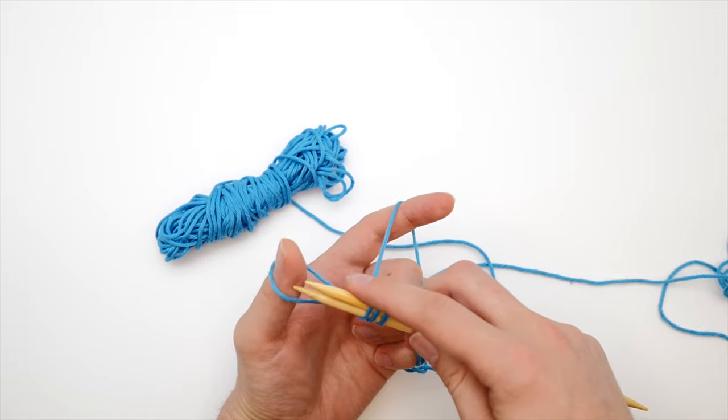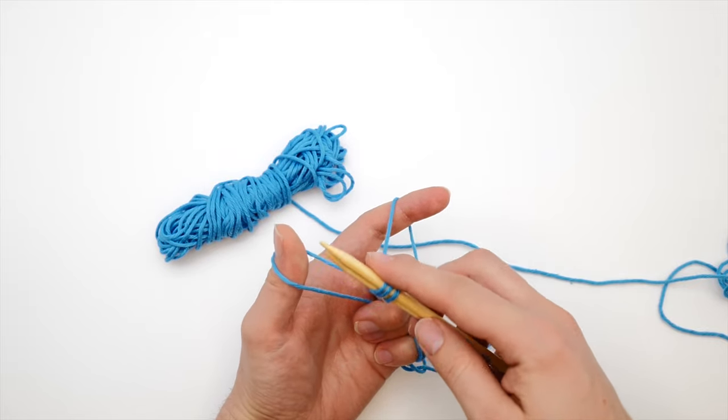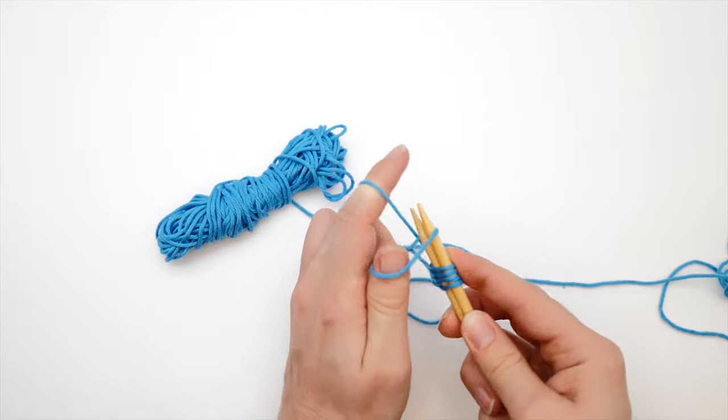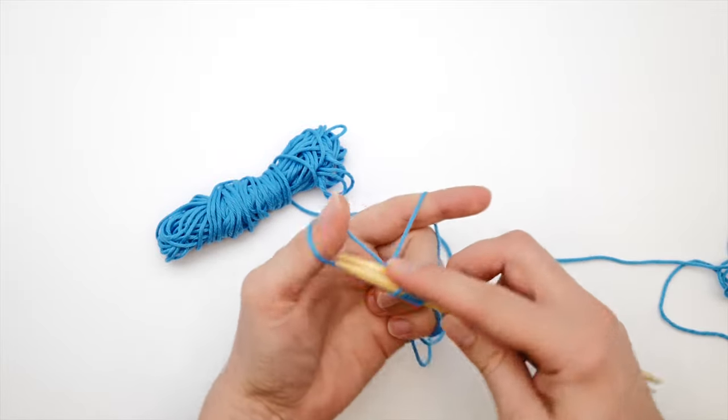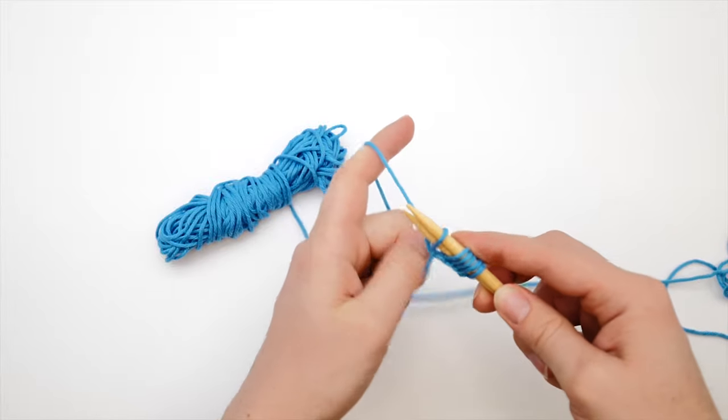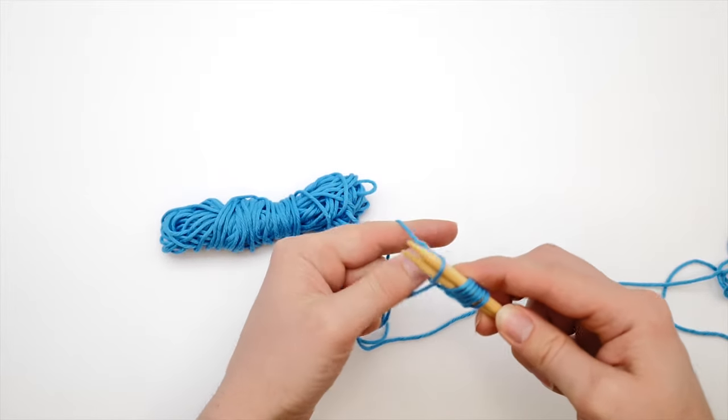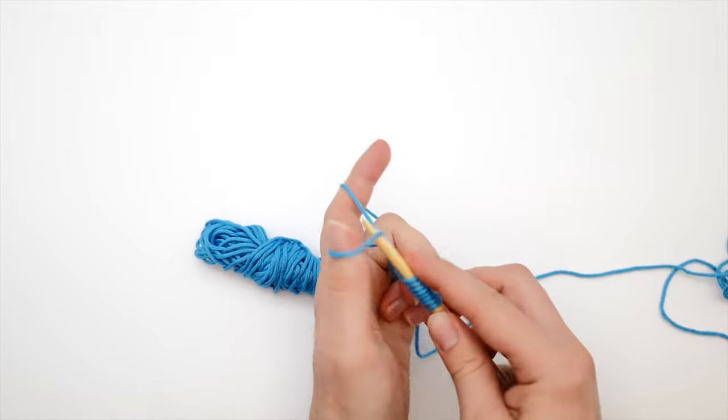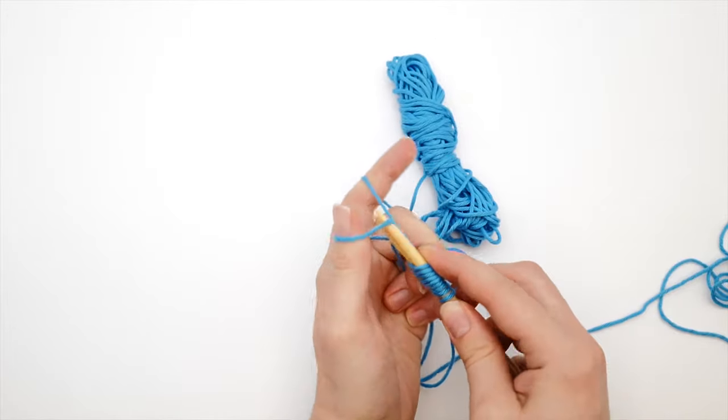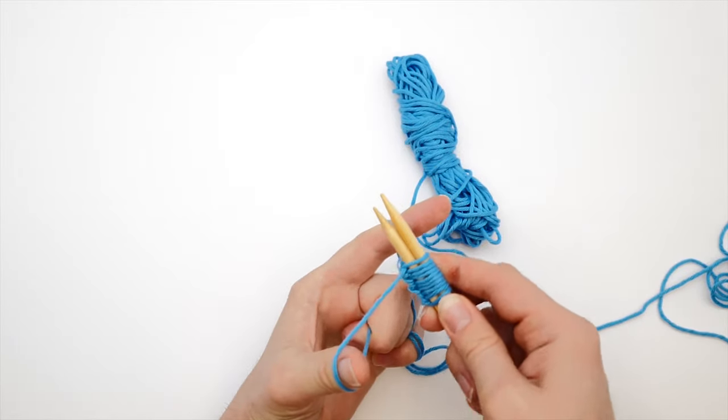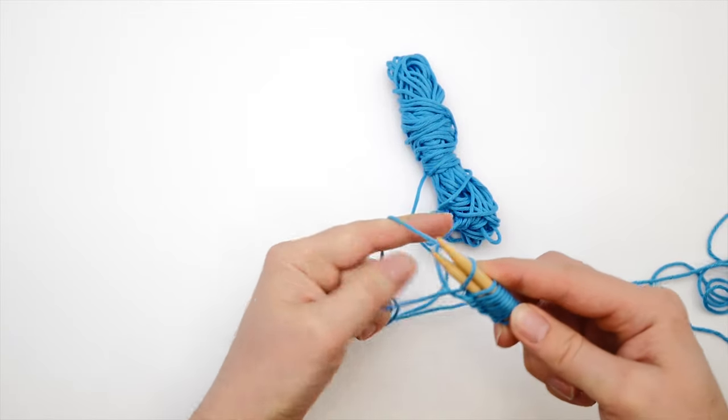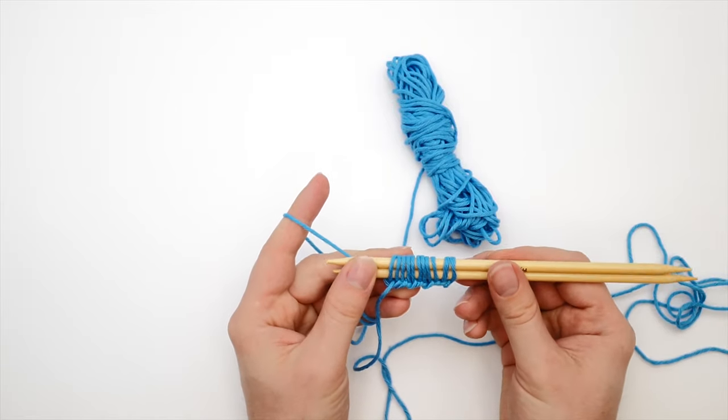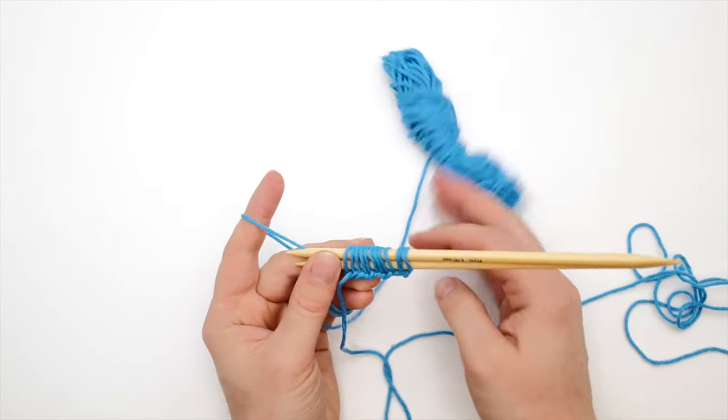So as you can see there's really no magic about it. And I feel this is a very fast cast on technique. And it might seem a bit complicated at first wrapping the yarn this way and that way. But I feel it's totally worth it because this cast on edge looks really neat in the end. And it's really easy to knit.